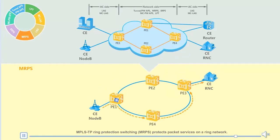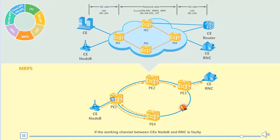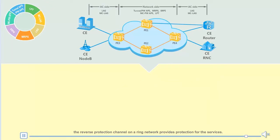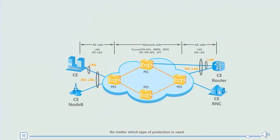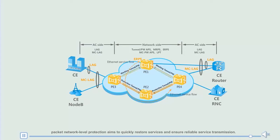MPLS-TP ring protection switching protects packet services on a ring network and mainly applies to networks with many ring networking scenarios. If the working channel between a CES node and RNC is faulty, the reverse protection channel on the ring network provides protection for the services. No matter which type of protection is used, packet network level protection aims to quickly restore services and ensure reliable service transmission. Protection needs to be configured based on network situations to ensure timely service restoration and prevent long-term service interruption.